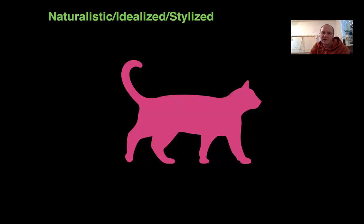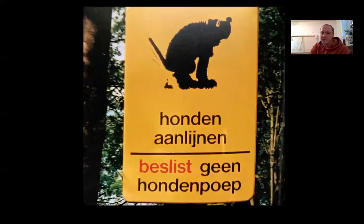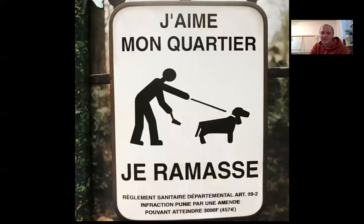Cat, right? It's not one of my four cats — it's just 'cat.' Maybe not the greatest stylization — it looks kind of like a bear, but obviously it's supposed to be a dog. Guy, dog, right? Not a specific person, not a specific dog.